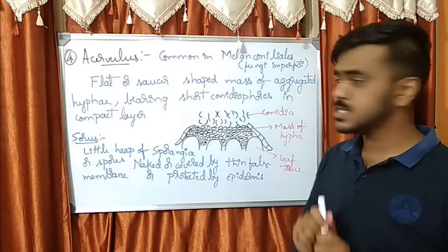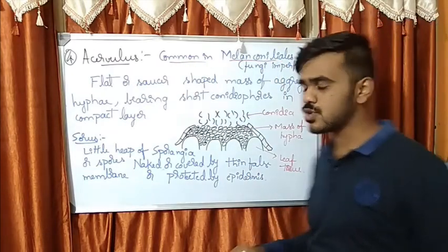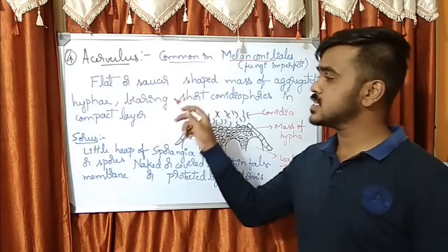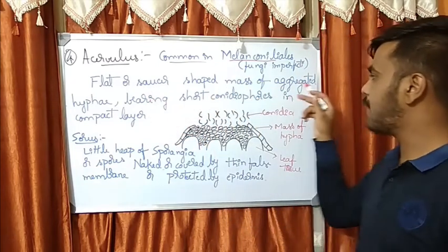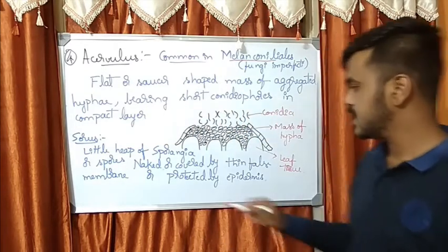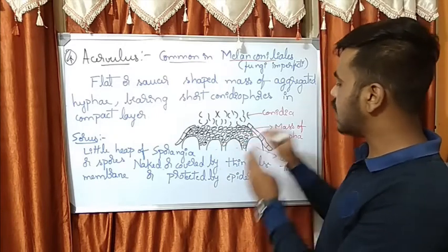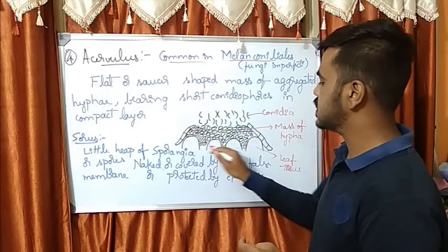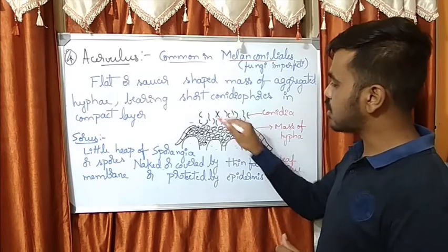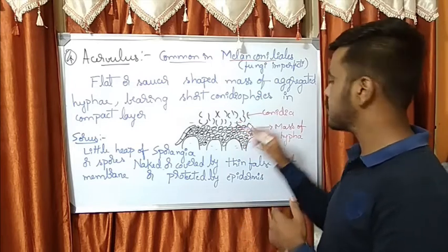The last structure in the asexual fruiting body is the acervulus. Remember, the acervulus is very common in Melanconiales in the Fungi Imperfecti (Deuteromycetes). It is a flat or saucer-shaped mass of aggregated hyphae bearing short conidiophores in compact layers. These are the leaf tissues — the host — above which a mass of aggregated hyphae is formed, and above that the short conidiophores produce the conidia.